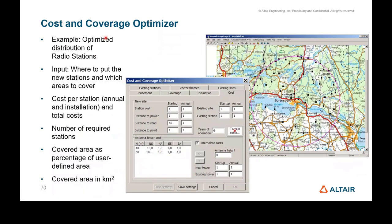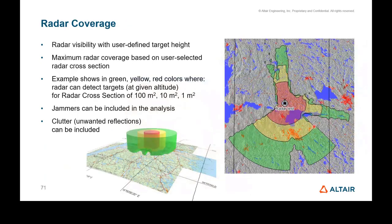RAP includes a cost and coverage optimizer — you can specify a budget and optimize station placement accordingly. For radar coverage, the tool shows what radar cross-section is detectable in different areas: 100 m² for large objects, 10 m², and down to 1 m² for very small objects, so you can evaluate radar performance ahead of time.